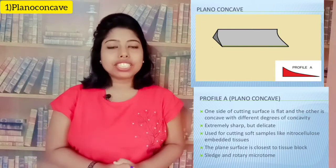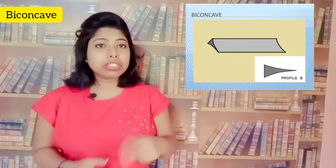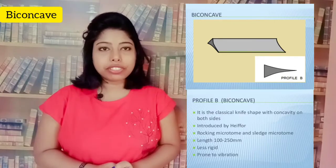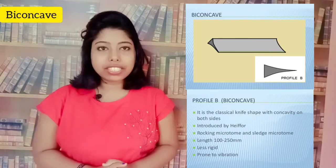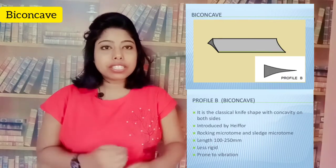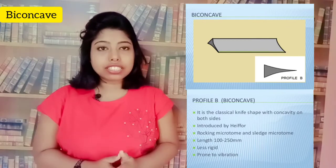The next knife is the bi-concave. 'Bi' means two — both sides of the knife are concave in nature. This is a classical knife used for the rocking as well as the sledge microtome. It is used only for wax embedding medium.